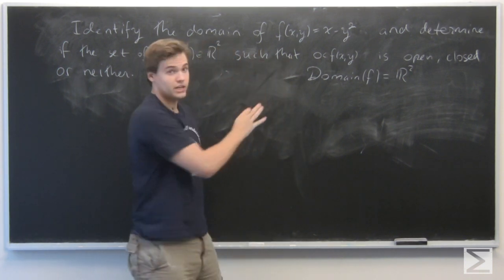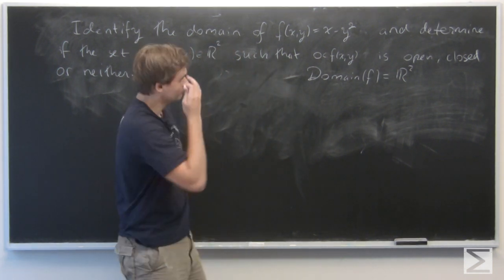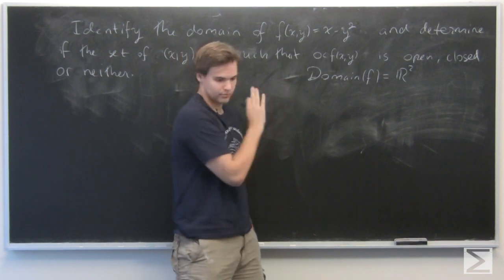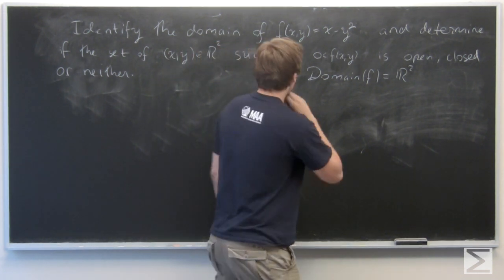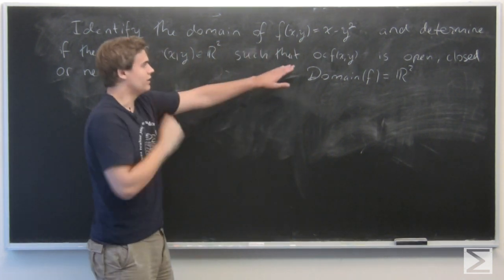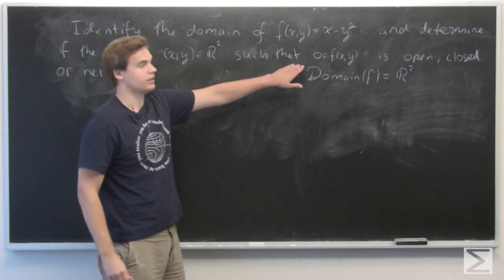And moreover, it's continuous since polynomial functions are continuous. So that's good. And now we want to look at this set of points where f of xy is greater than 0.